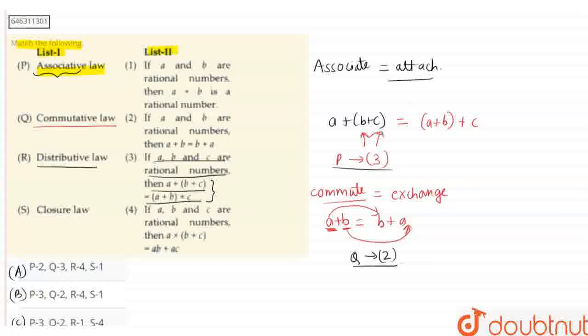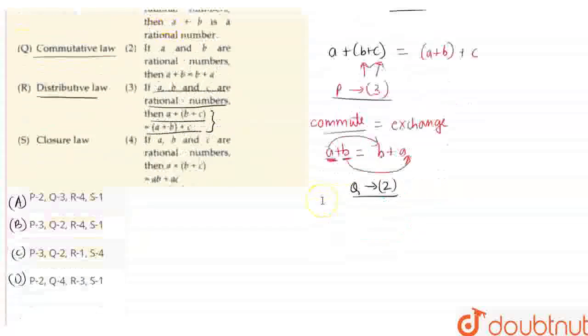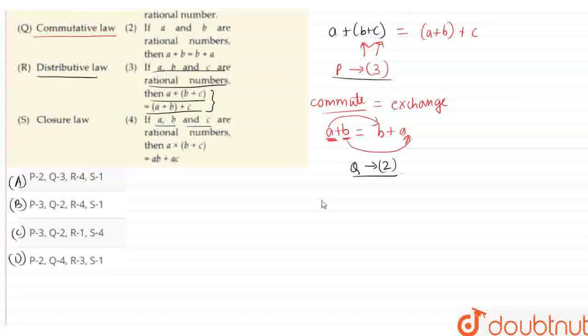The third option, R, is the distributive law. By its name, it suggests distributive properties. The definition says that if A, B, C are rational numbers, then A times (B plus C) can be written as (A times B) plus (A times C).